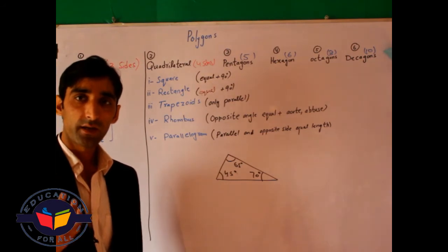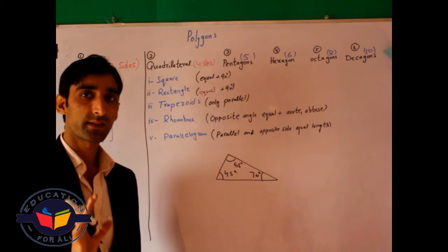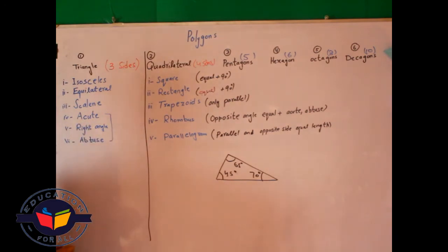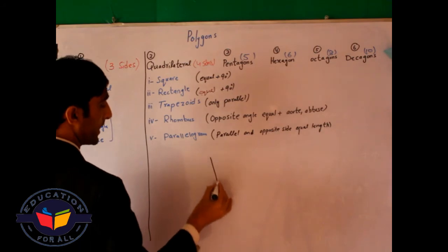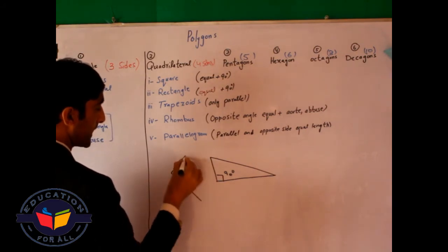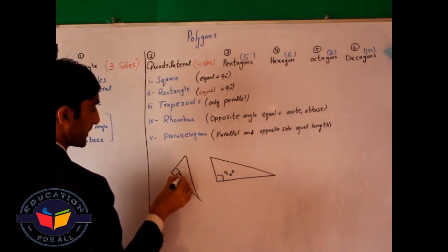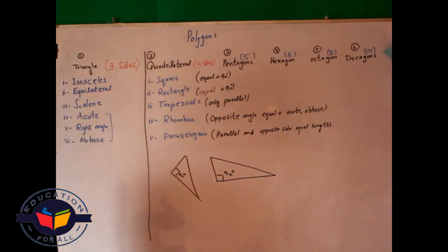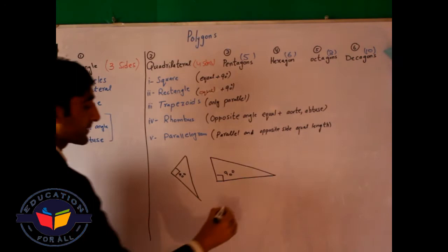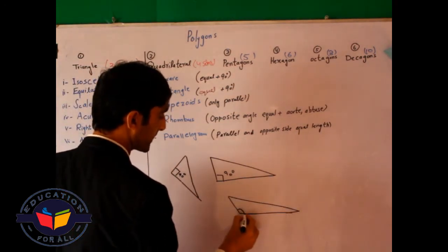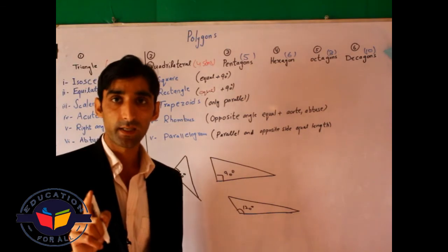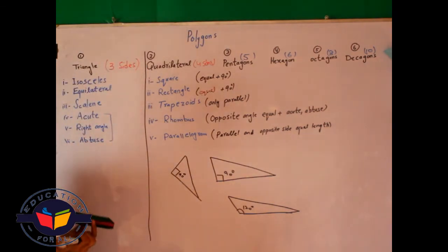What is an acute triangle? Any triangle in which every angle is less than 90 degrees is called an acute triangle. What is a right angle triangle? Any triangle which has one angle equal to 90 degrees is called a right angle triangle. What is an obtuse triangle? Any triangle in which one angle is greater than 90 degrees is called an obtuse triangle.